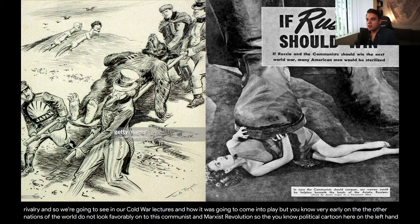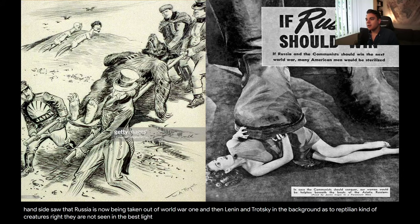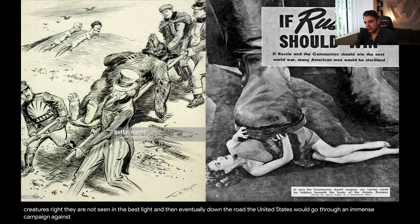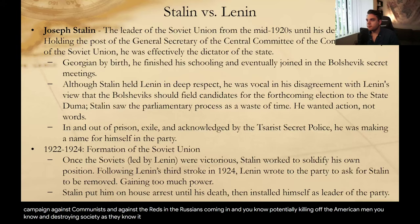The political cartoon on the left-hand side shows Russia being taken out of World War I, with Lenin and Trotsky in the background as two reptilian-kind of creatures — not seen in the best light. Eventually, down the road, the United States would go through an immense campaign against communists and against the Reds and the Russians potentially killing off Americans and destroying society as they know it.